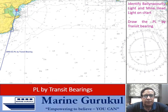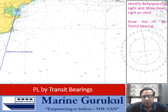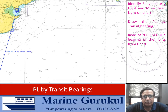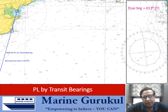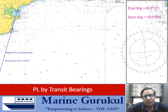Now we use our parallel ruler, put it on this line, and read off the bearing of Mine Head and Balina Coty from the compass rose — which of course would be the same. We find the bearing of Mine Head or Balina Coty is 013 degrees true as read from the chart. The gyro bearing is given as 015 degrees gyro, so the gyro error is 2 degrees. Since the gyro reading is high, the error is 2 degrees high.